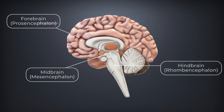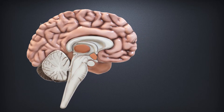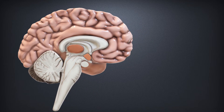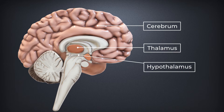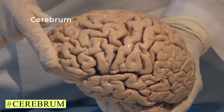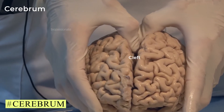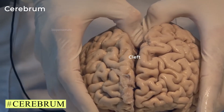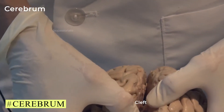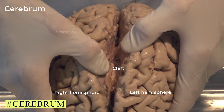The forebrain consists of the cerebrum, thalamus, and hypothalamus. The cerebrum is the major and largest part of the human brain. A deep cleft divides the cerebrum longitudinally into two halves, termed the left and right hemisphere.